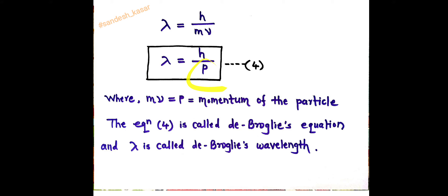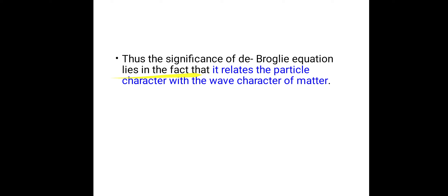Finally, we have the equation λ = h/p. This is called de Broglie's equation, and λ is called de Broglie's wavelength. The significance of de Broglie's equation lies in the fact that it relates the particle character with the wave character of matter.